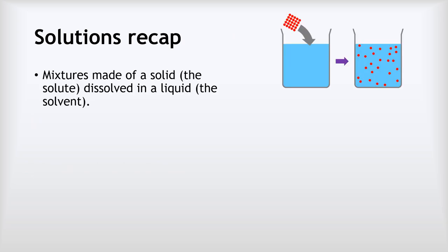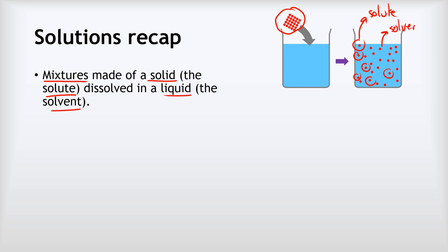Let's recap our understanding of solutions. A solution is a mixture made of a solid, which we call the solute, dissolved in a liquid, which we call the solvent. When we dissolve a solid substance, its individual particles break up into tiny individual particles and spread evenly throughout the whole liquid. The dissolved red particles are our solute and the blue water they're dissolved in is the solvent.